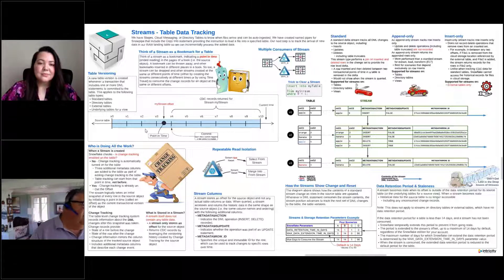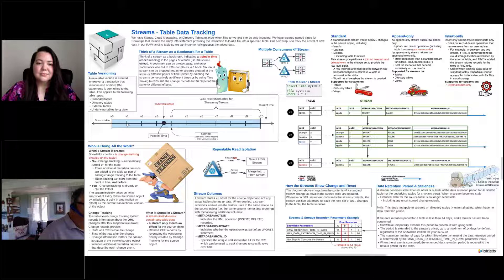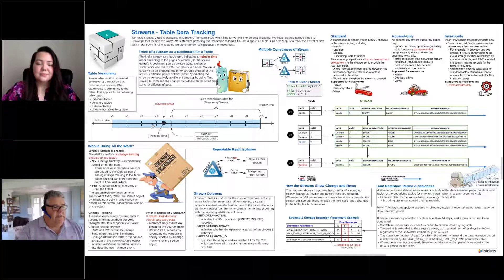Every time you see the V here, this is another commit for this table. So version one: we inserted some records, we did a commit. Version two: we did some updates, we did a commit. Version three: we did some deletes, we did a commit.